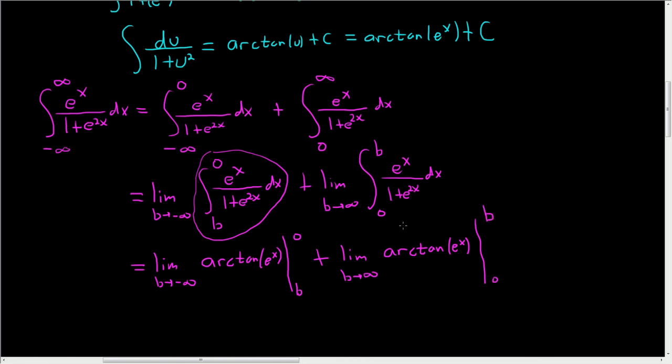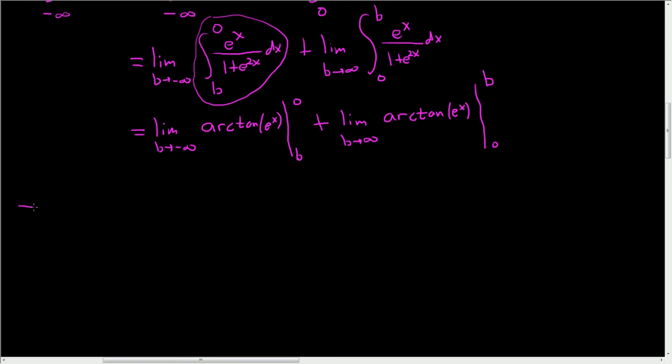Let's keep going very very carefully. So this is equal to the limit as b approaches negative infinity. So now we actually have to evaluate arctan of e to the x at these numbers 0 and b. So first you plug in the 0 and e to the 0 is 1. So we get arctan of 1, which is pi over 4. But I'll leave it as arctan of 1 for now. Minus arctan of e to the b.